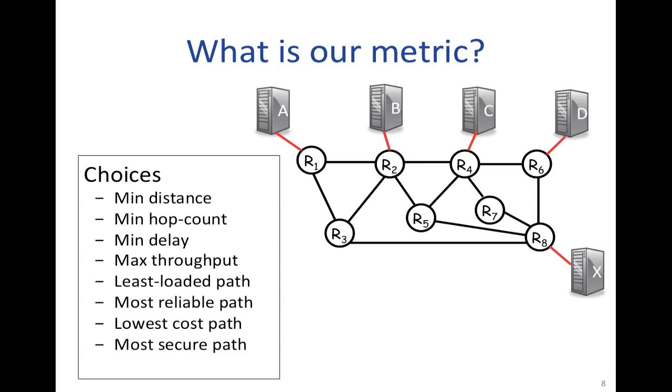It could also be the lowest cost path. I may have a price or a cost associated with using any one link, and I want to minimize it. Or it could be the most secure path, the one that most recently has had the fewest security attacks. Or it might be one over which I have a virtual private network running, and so on. There are many, many metrics that I could use. Or in fact, I could actually use a combination of any of those.